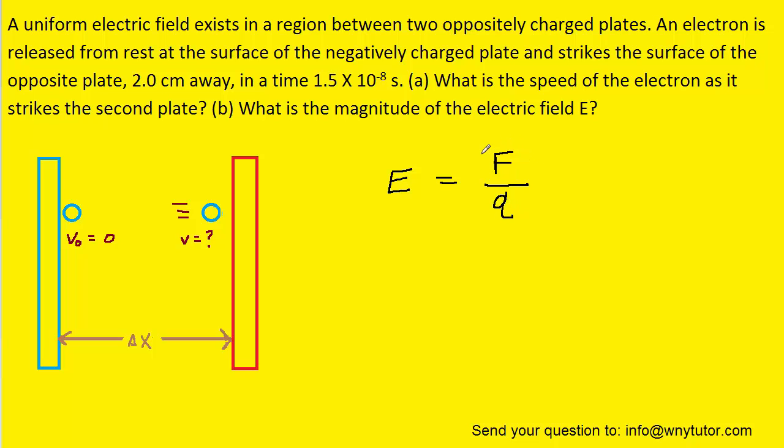We just need to calculate the force that's acting on the electron. Well, according to Newton's second law, we know that the force is equal to the mass of the particle times its acceleration. So we could rewrite the electric field equation in the following way.